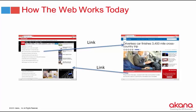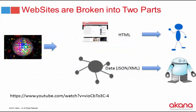Websites are broken up into two parts: the HTML part — which browsers, clients, and humans can read and understand — and the data part. The data part is JSON and XML and is more understood by machines. HTML is human-readable; the data layer is machine-readable.